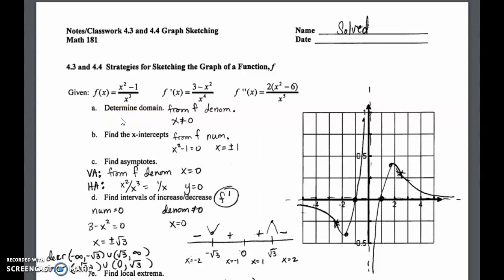The first thing we have is to determine the domain. The domain comes from the original function, and we look for the restrictions — that means we look in the denominator for what causes it to equal zero. In this case, zero cubed is zero, and that would cause the function to be undefined, so x cannot equal zero.